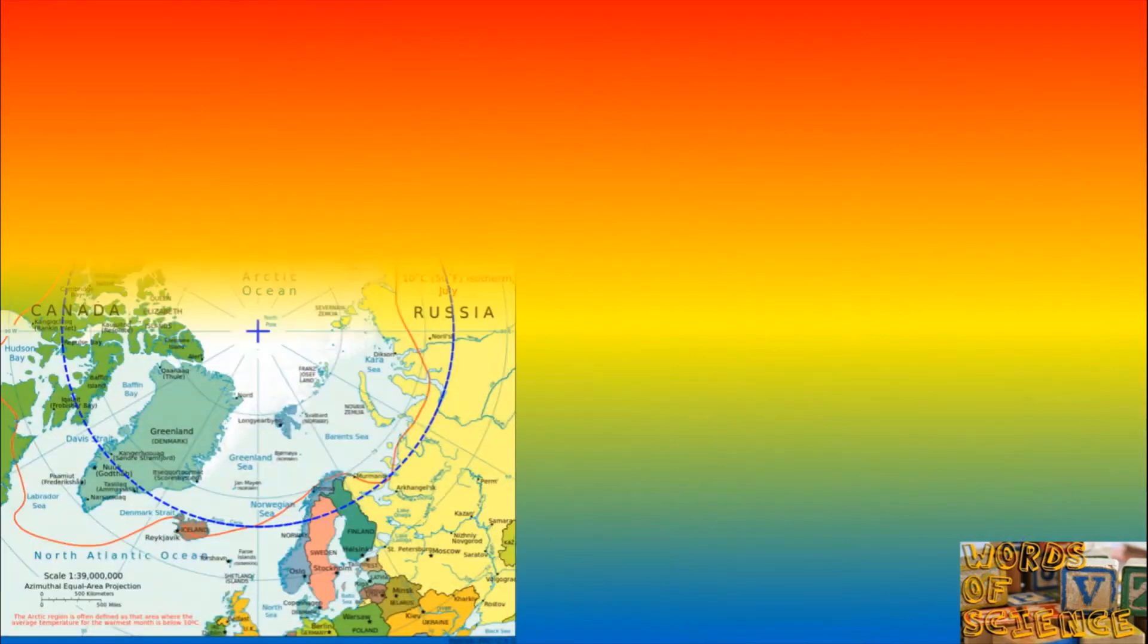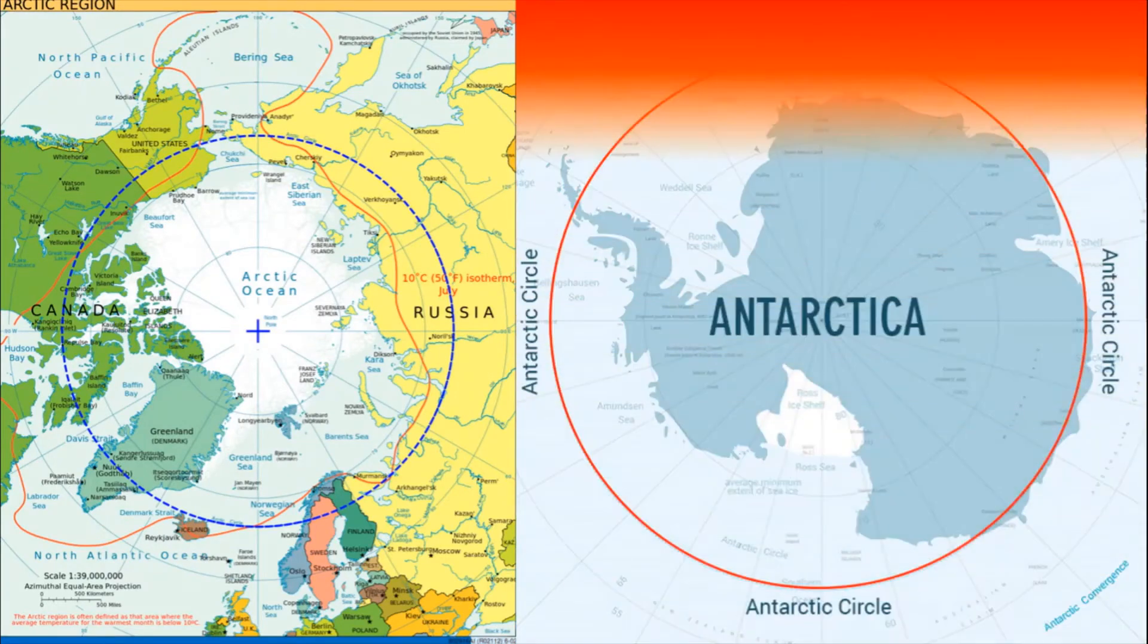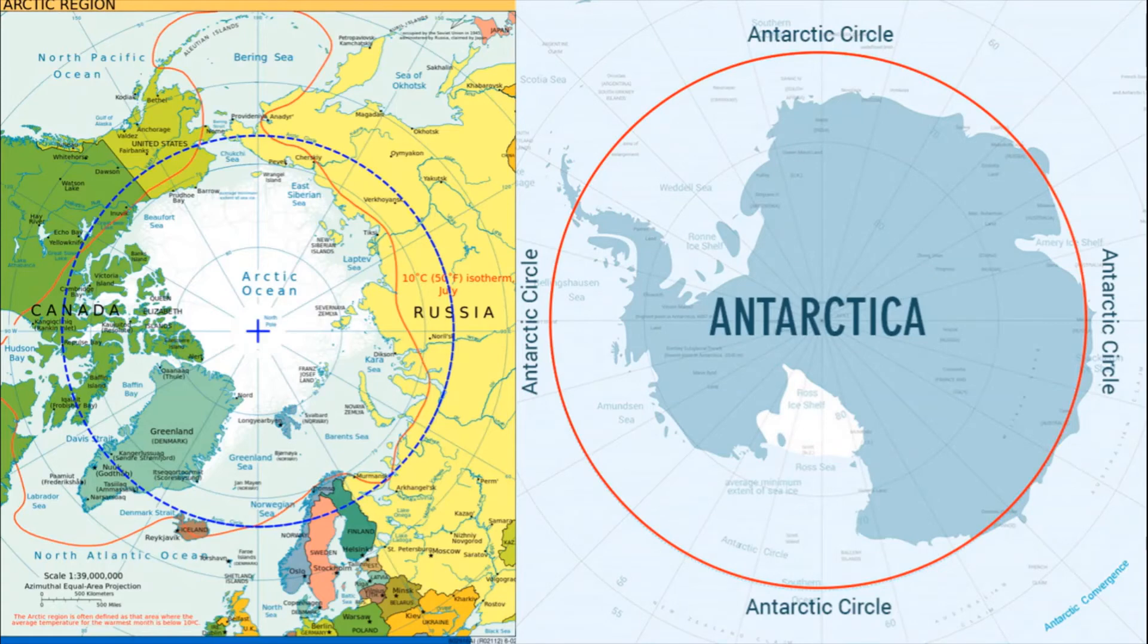The imaginary circle that limits this region is the Arctic Circle in the North and the Antarctic Circle in the South. Furthermore, the ice-covered continent lying almost entirely within the Antarctic Circle is Antarctica.